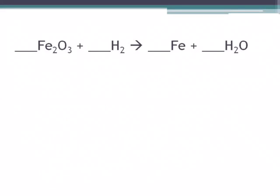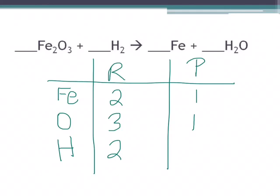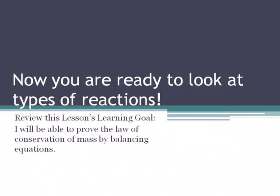In this equation we have iron, oxygen, and hydrogen. Let's create our chart with Fe, O, and H. On our reactant side we have two iron atoms; on our product side, one. On our reactant side we have three oxygens; on our product side, one. For hydrogens, we have two on our reactant side and two on our product side. We start with the irons — multiply our product side by two to get two irons. Then we do our oxygens — multiply the product side by three. Placing the three in front now gives us six hydrogens, so we multiply our reactant hydrogen side by three to get six. Now we're ready to look at the types of reactions.